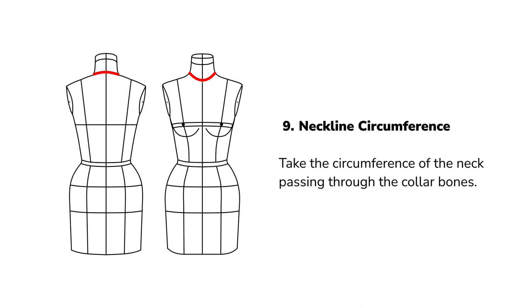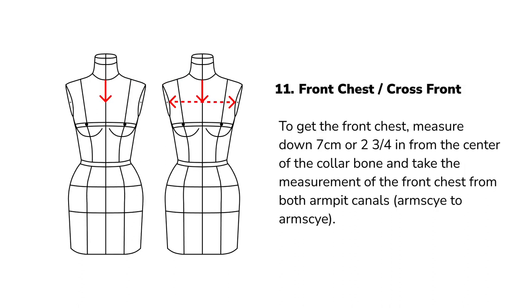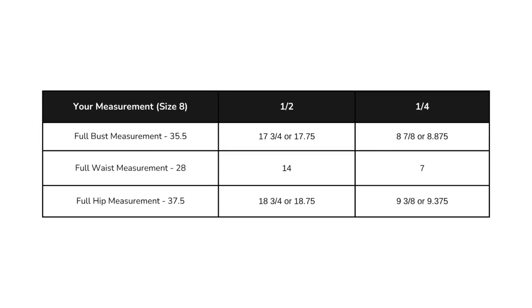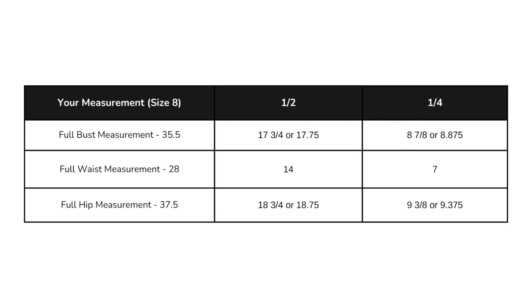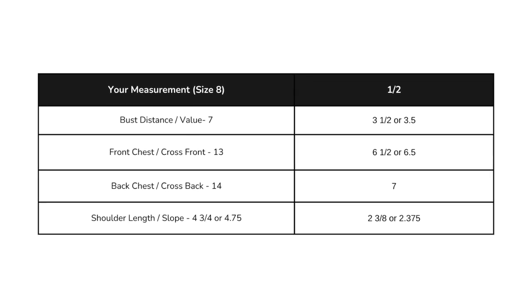Neckline circumference: measure the circumference of the neck passing the tape measure through the collarbones. Shoulder length or shoulder slope: measure from the base of the neck, the shoulder neck point, to the tip of the shoulder joint parallel to the armpit. Front chest or cross front: begin 7 centimeters down from the center of the collarbone and measure across from both armpit canals. Back chest or cross back: start 15 centimeters down from the back neck bone or nape and measure across from both armpit canals. When finished recording measurements, note the one-half and one-fourth measurements as indicated on the chart — we will rely heavily on these during drafting.